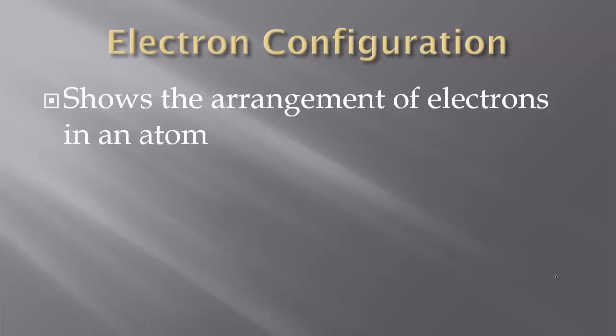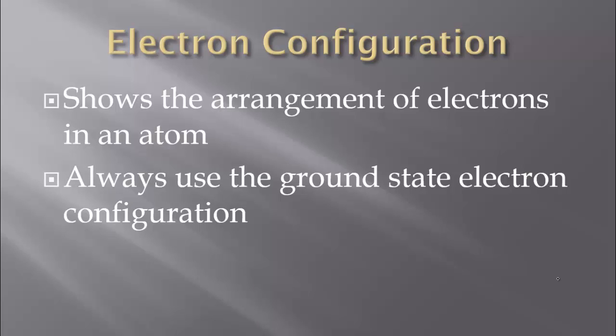We're going to begin with electron configurations. What are they? They show the arrangement of electrons in an atom — in any atom, it will show you where all of its electrons are located. When we do electron configurations, we're always going to use the ground state electron configuration, because electrons are constantly moving, getting energy, and moving to different energy levels and falling back down. So we use the ground state — if there was no energy around, this is where all of the electrons in this atom would be located.